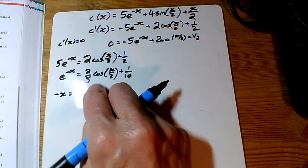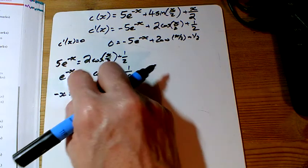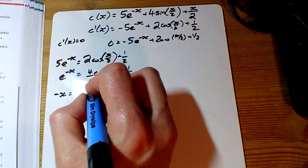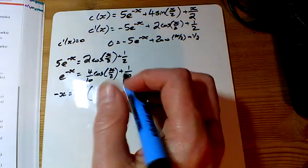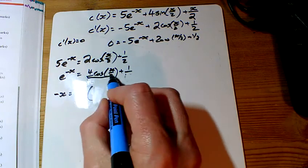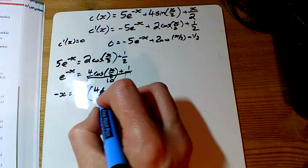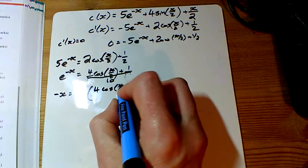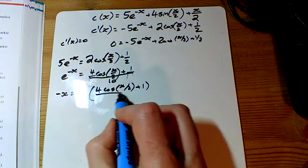I know how they're doing this. They're changing that into tenths. So rather than writing 2 fifths, they've written 4 tenths. And then rather than writing that all as two different fractions, they're writing it as one fraction there. So we've got 4 cos of that plus 1 over 10.